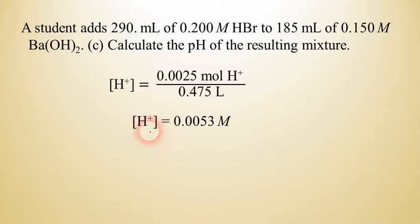And once you know the hydrogen ion concentration, it's a really easy step to go from there to the pH. Just take negative log of that. And it's about 2.28. And so this is how we can find the pH of strong acid, strong base mixtures after they've been put together.